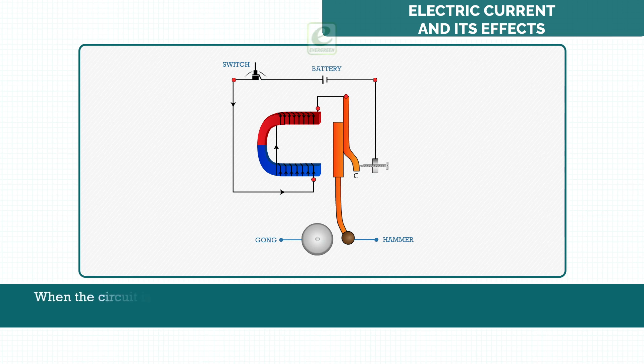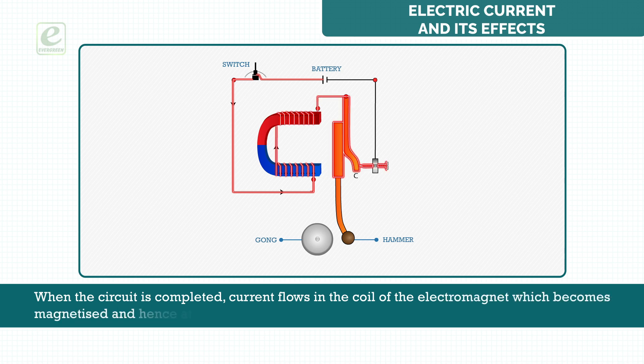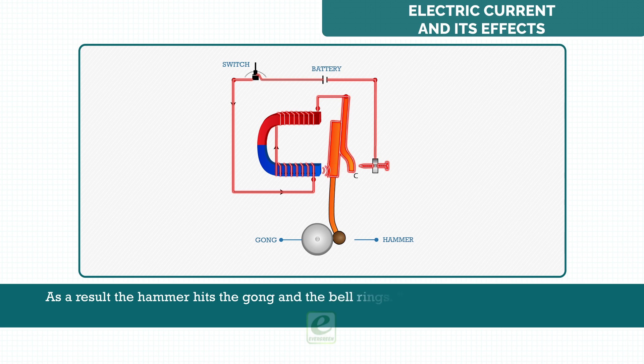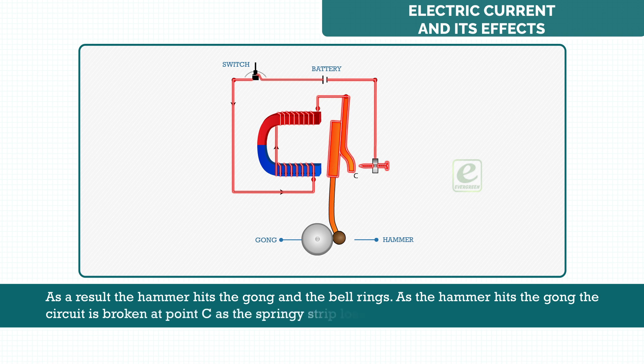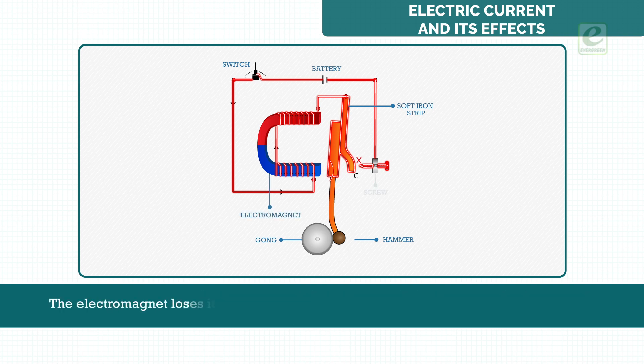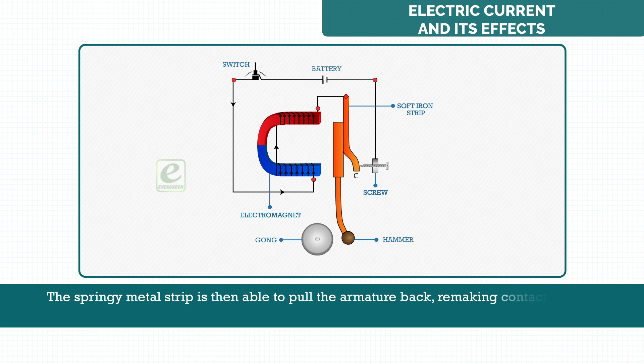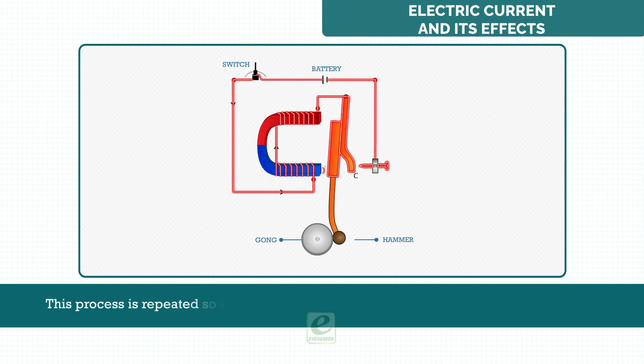When the circuit is completed, current flows in the coil of the electromagnet which becomes magnetized and hence attracts the soft iron armature towards it. As a result, the hammer hits the gong and the bell rings. As the hammer hits the gong, the current is broken at point C as the springy strip loses contact with the contact screw. The electromagnet loses its magnetism and no longer can attract the soft iron armature. The springy metal strip is then able to pull the armature back, remaking contact at point C and hence completing the circuit again. This process is repeated so long the bell push is pressed and continuous ringing occurs.